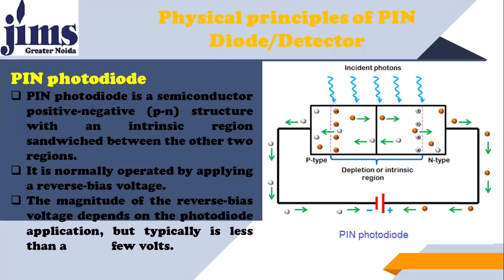Because of the high resistivity, most of the electric field appears in that intrinsic region. The charge carriers are under stress due to the high electric field, and because of the high electric field there is a high electric force. It is normally operated by varying the reverse biasing voltage, and the magnitude of that reverse biasing voltage depends on the photodiode application, but typically it is less than a few volts.